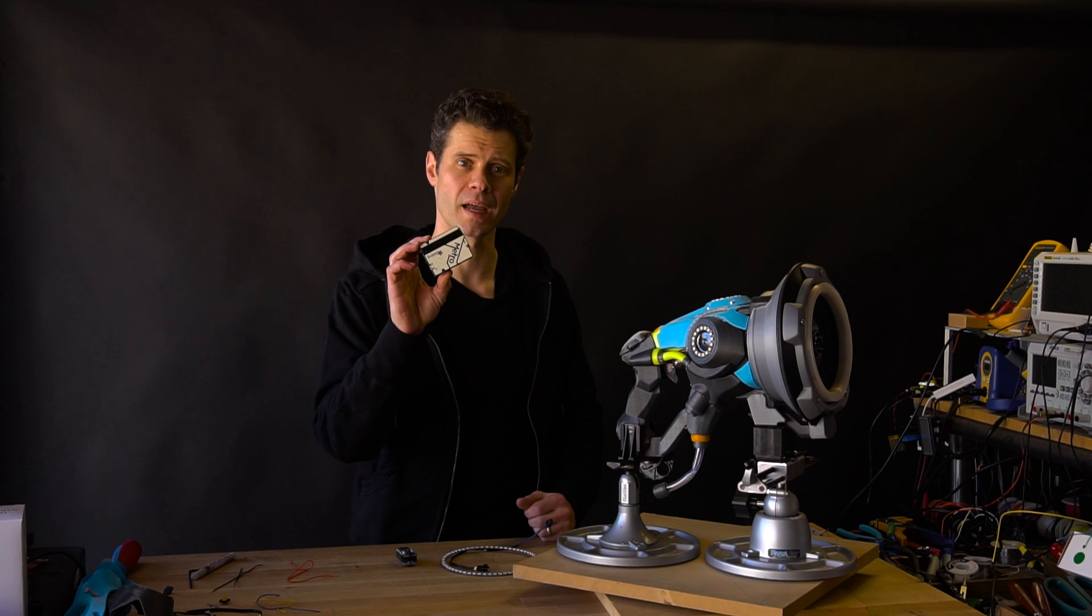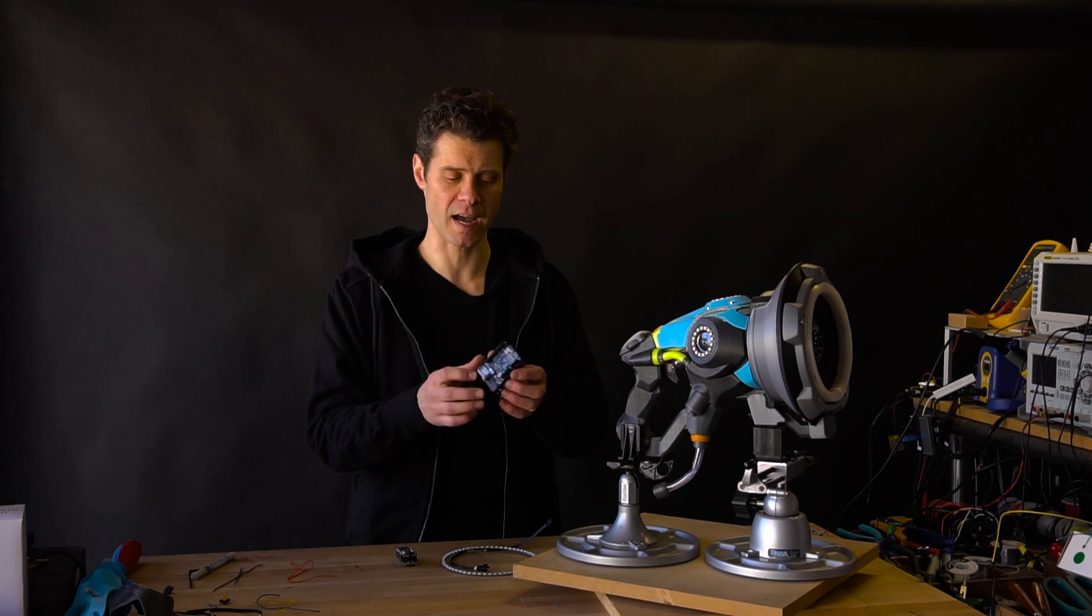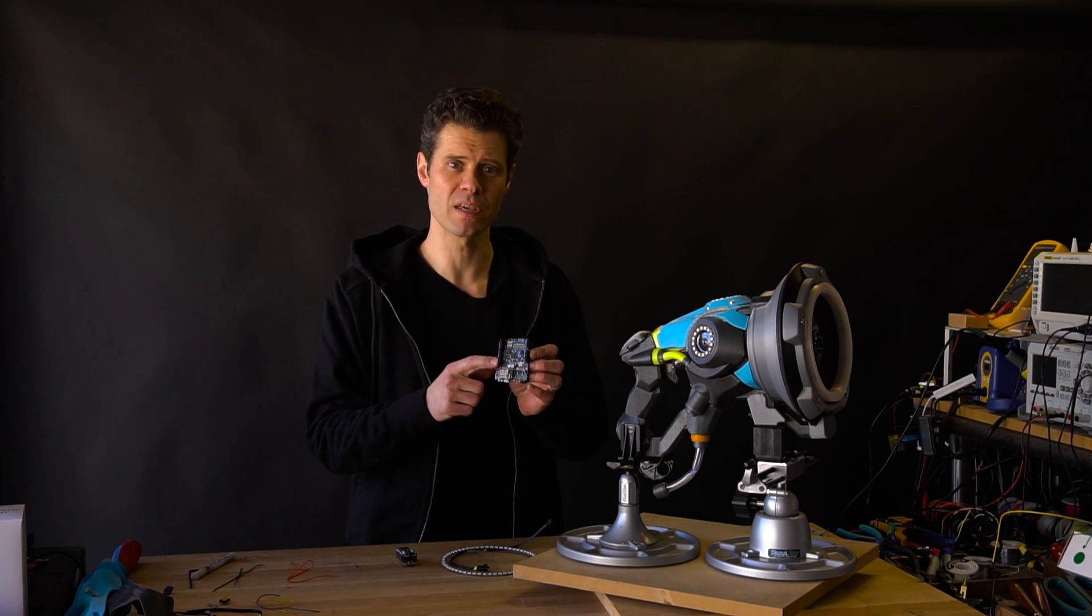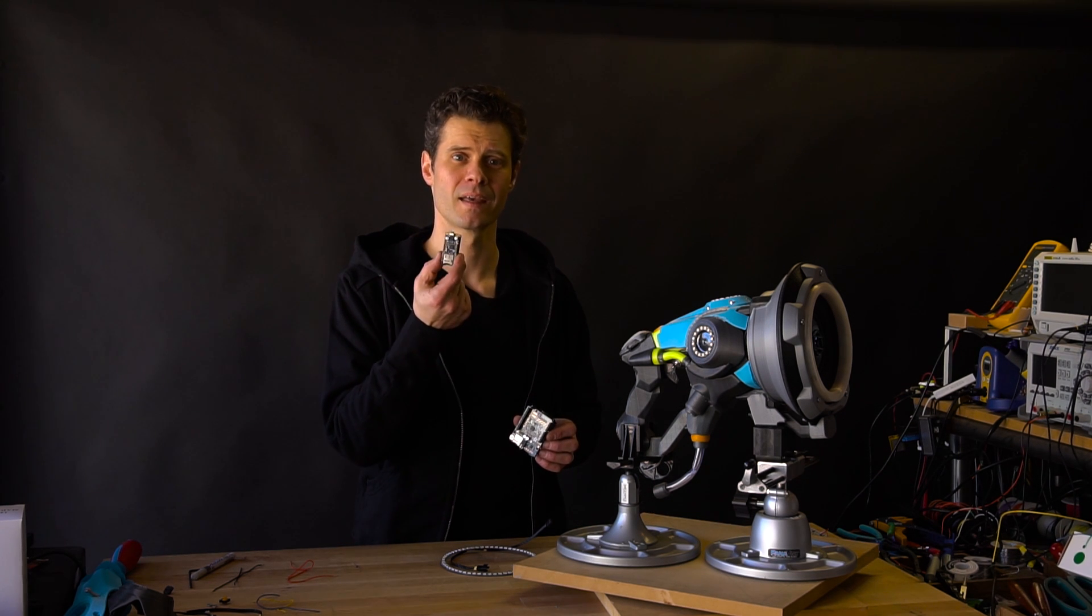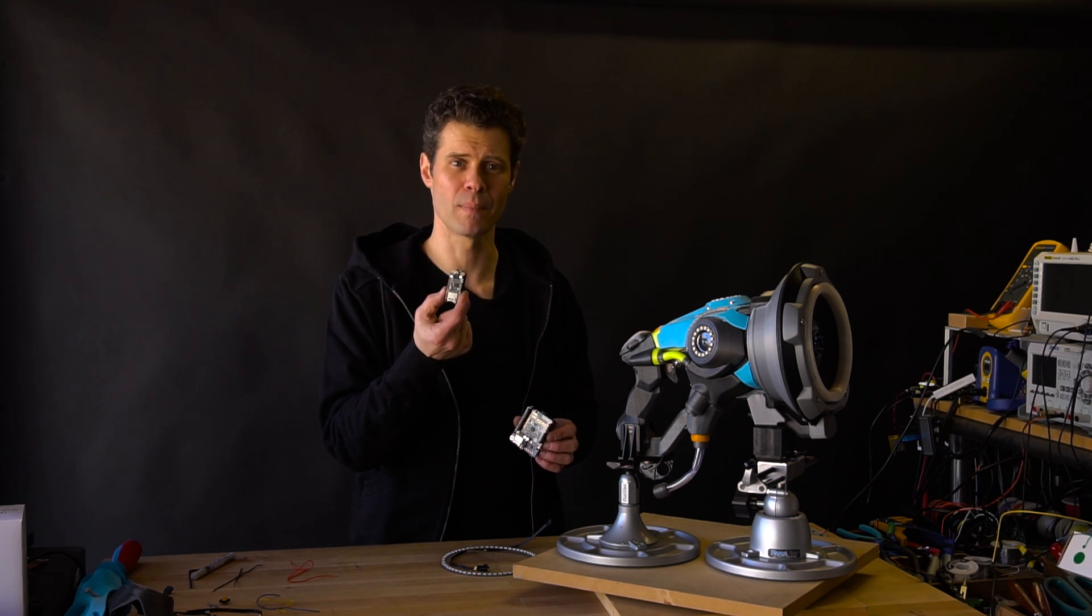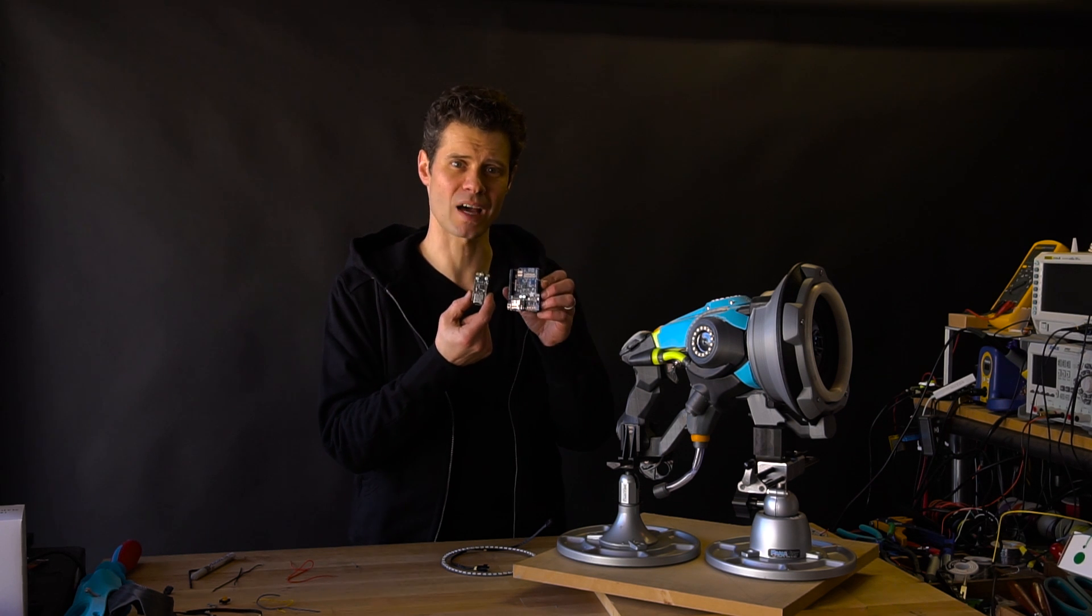This is an Arduino Uno, or a Fruit Metro, full-sized, and a full-sized MP3 shield. Here is the feather and the MP3 feather wing that is the same exact thing in many regards, but is a heck of a lot smaller.